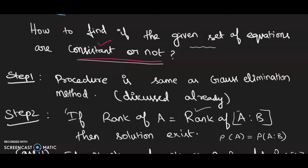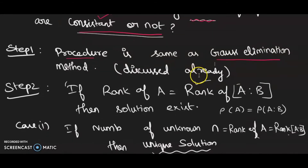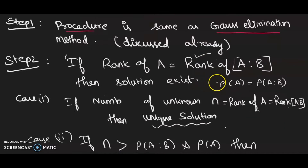In this video, let's see how to find if a given set of equations is consistent or not — that is, whether a solution exists. The procedure is the same as the Gauss elimination method, which we have already discussed in detail. Once we are done with that, we have to check the rank of A and the rank of the augmented matrix [A|b].